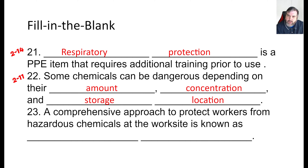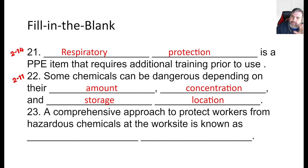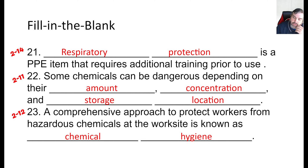I'll be honest, I had a slightly different set of answers — I had location, amount, concentration, and use — I thought they had the 'and' in the wrong spot. A comprehensive approach to protect workers from hazardous chemicals at the work site is known as chemical hygiene, and every workplace should have a chemical hygiene plan. Even schools — as a high school chemistry teacher, we have a chemical hygiene plan, or at least a semblance of one.